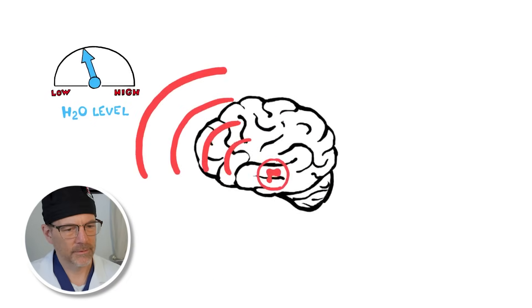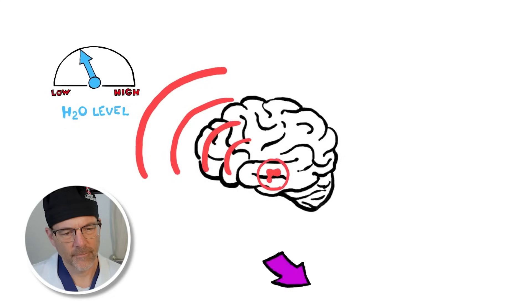At first detection of low water levels, sensory receptors in the brain's hypothalamus signal the release of antidiuretic hormone.